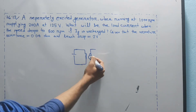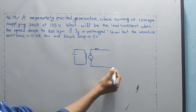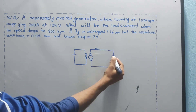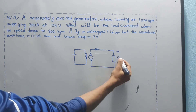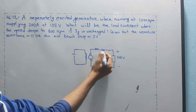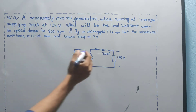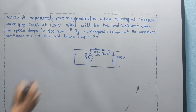We need to find the armature resistance. The terminal voltage is 125V, load current is 200A, and the armature resistance is 0.04 ohm.